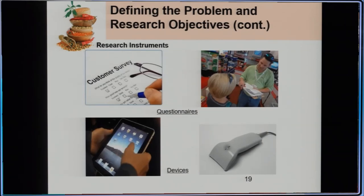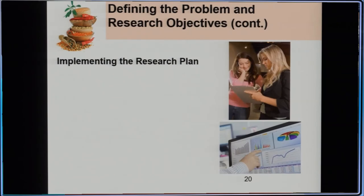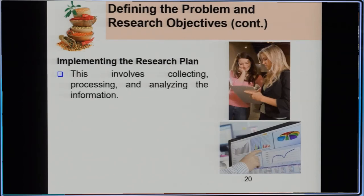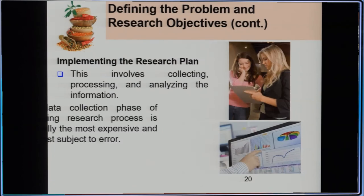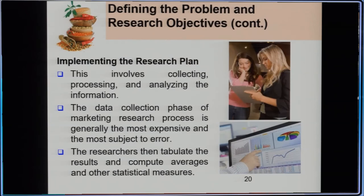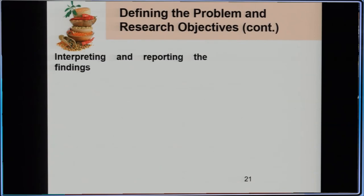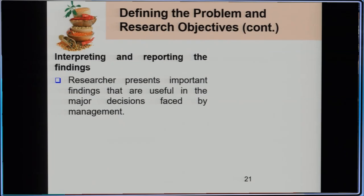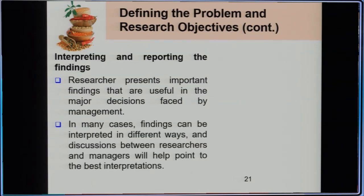The instrument used to collect information is typically a questionnaire for primary data, along with certain devices to collect needed information. After designing, you implement the research plan, which involves collecting, processing, and analyzing information. Data collection is generally the most expensive and most error-prone part of the process. The researcher then tabulates results and computes averages and other statistical measures. Finally, researchers present important findings useful for major decisions faced by management, and discussions between researchers and managers help identify the best interpretation.